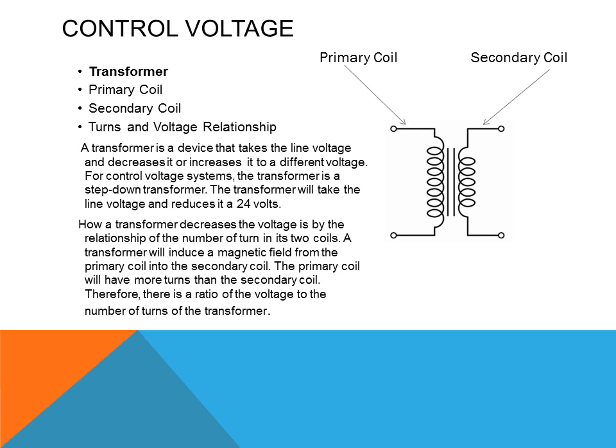The primary coil is the incoming voltage side, taking 110 or 120 volts and stepping it down into the secondary coil. This is based on the relationship between the number of turns in each coil. The formula used determines voltage based on the number of turns, where N is the number of turns and V is the voltage.